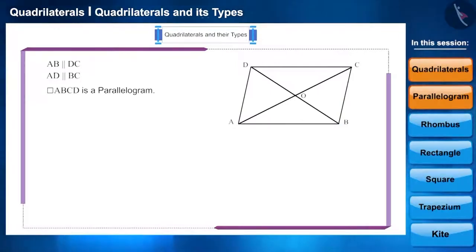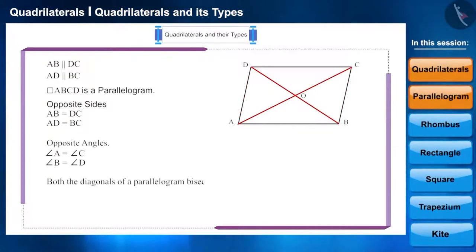Friends, we know that opposite sides and opposite angles in a parallelogram are equal and its two diagonals bisect each other. Hence, we can say that OA is equal to OC and BO is equal to OD.